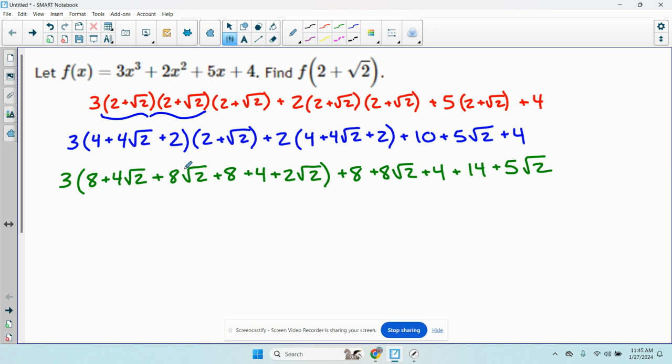Moving right along. Now I will combine like terms first before I distribute the 3. So I have 8 plus 8 plus 8 plus 4. That's 20. 16 and 4 is 20. 4 root 2, 8 root 2, 8 root 2, 2 root 2. That's 14 root 2.